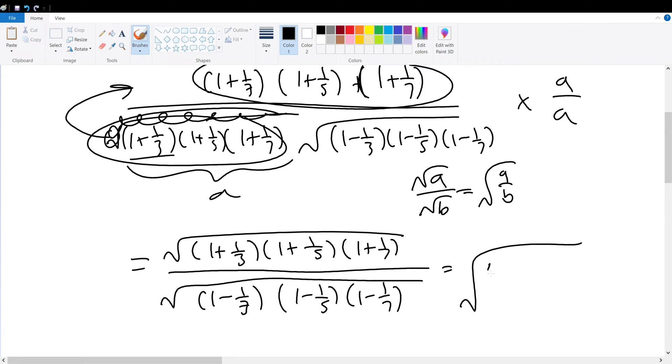Well 1 plus 1 over 3 is 4 over 3, times 6 over 5, times 8 over 7, times the conjugate, which is 3 over 2, times 5 over 4, times 6 over 7.